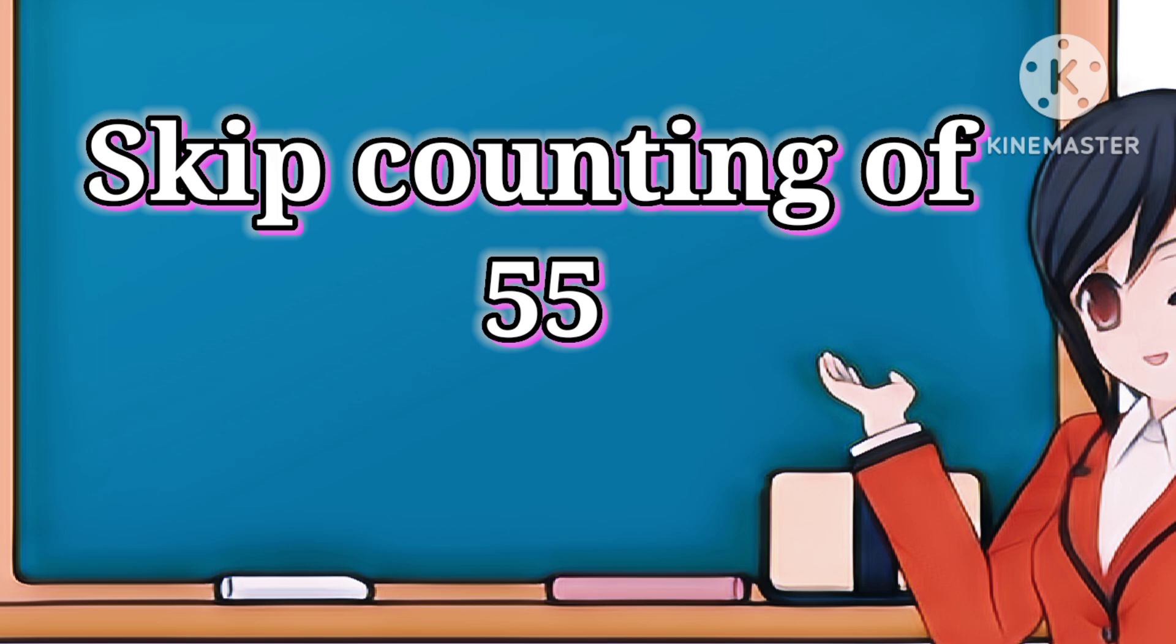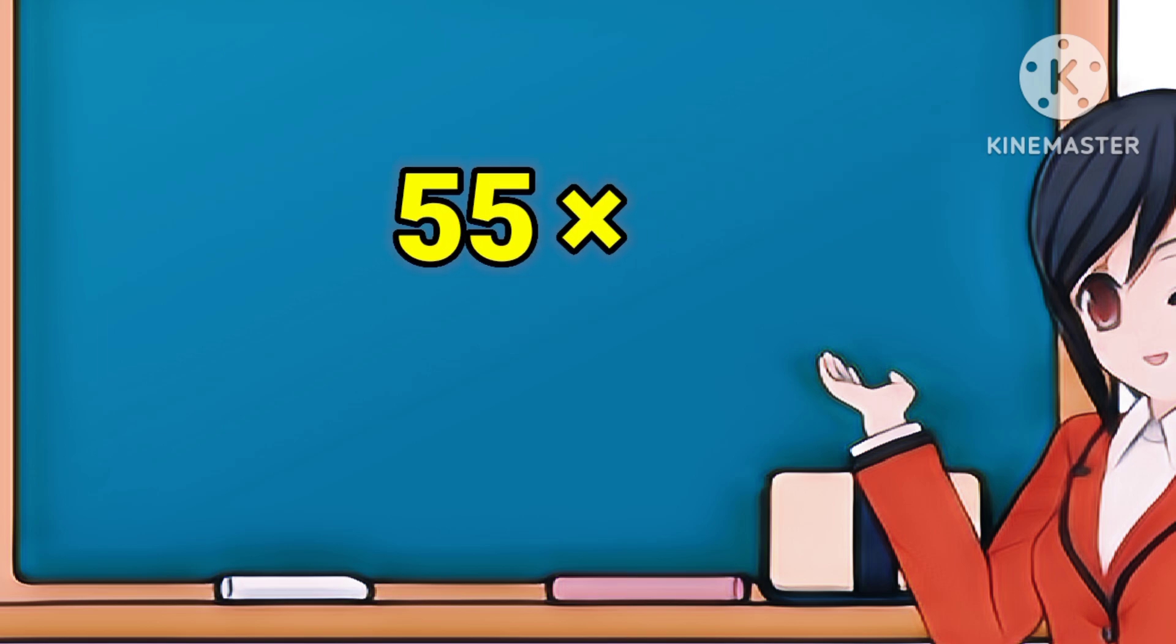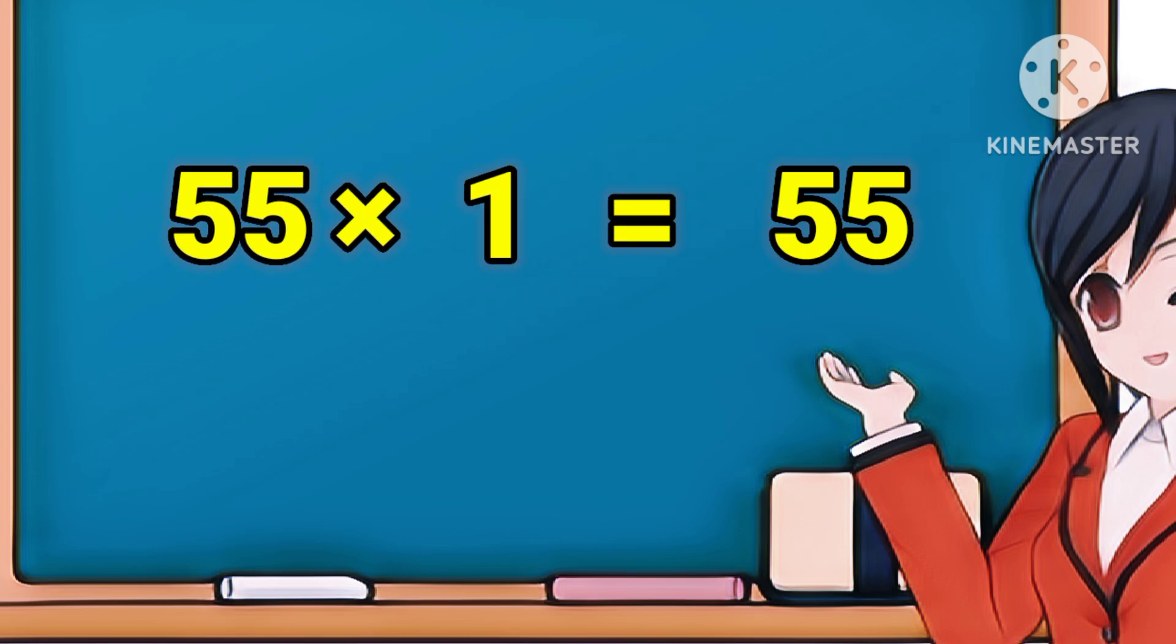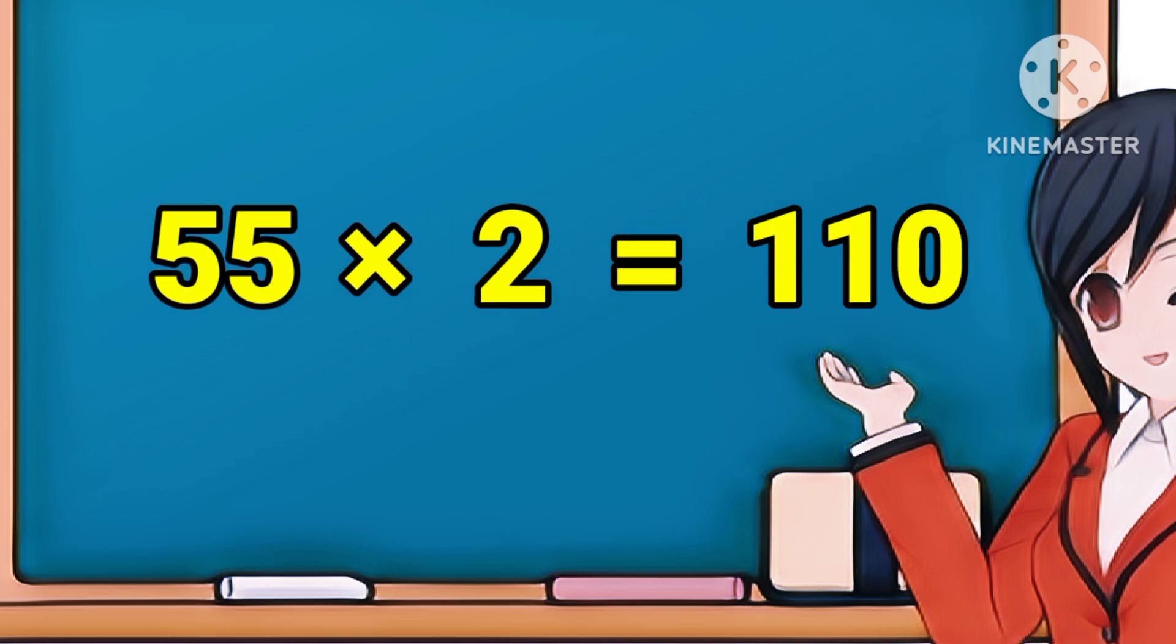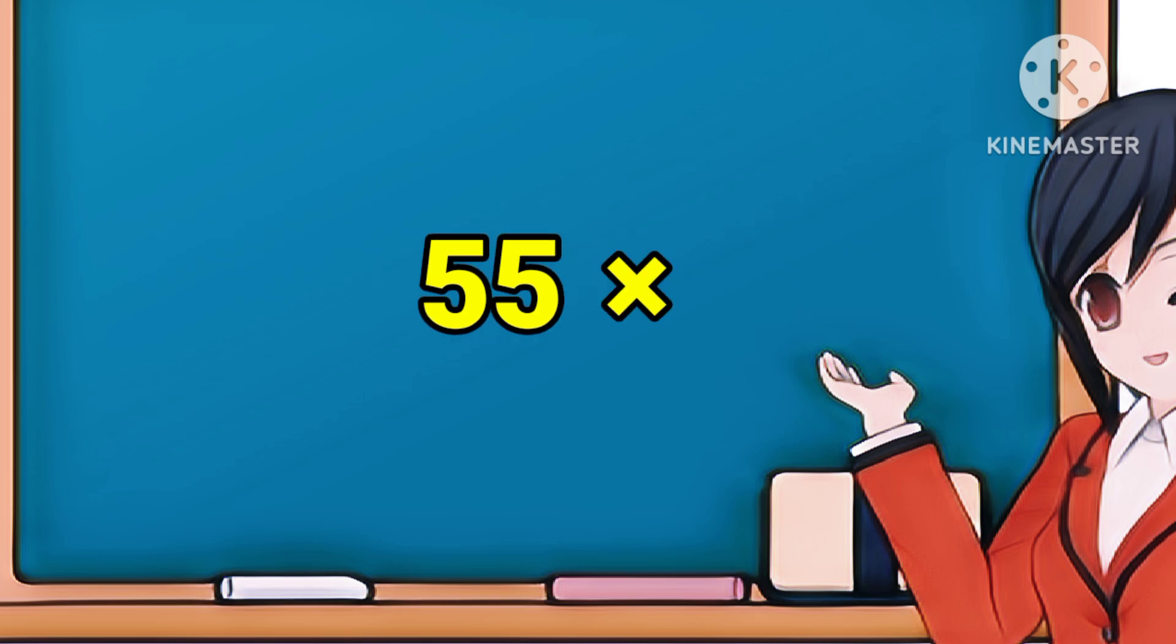55 × 1 = 55. 55 ones are 55. 55 × 2 = 110. 55 twos are 110.